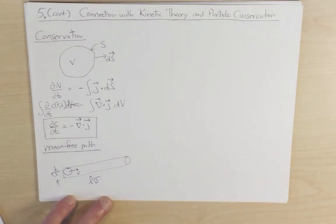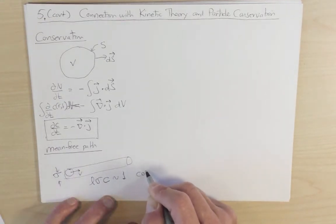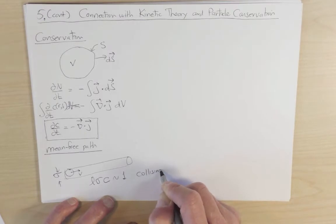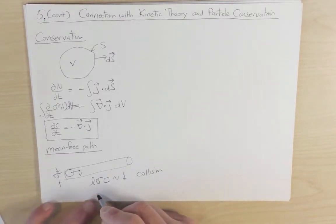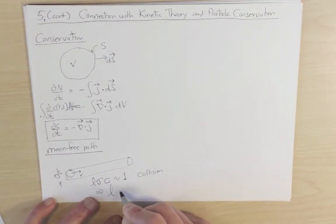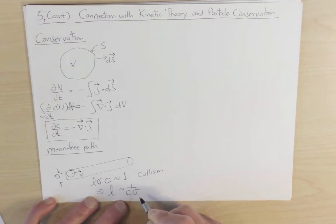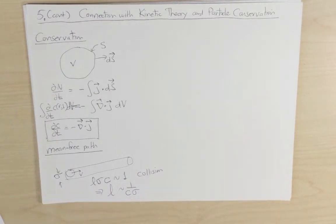And the criterion for the mean free path is that when the length of the tube times the area of the tube, so that's the volume of the tube, times the density of particles, when this is of the order of one, that means that a collision has occurred. So we therefore infer that the mean free path is typically of the order of one over c times sigma, where c is a particle concentration and sigma is the cross-sectional area of a molecule.